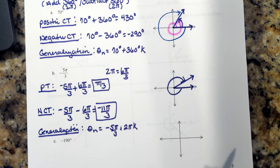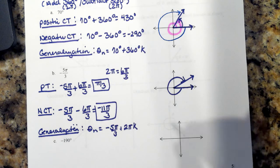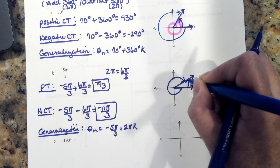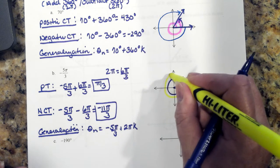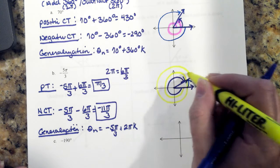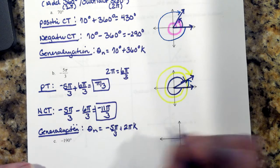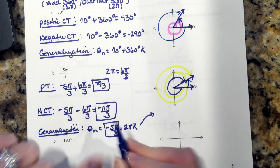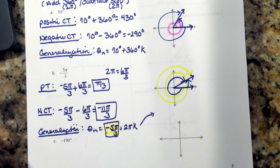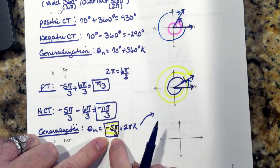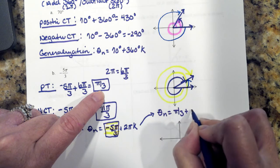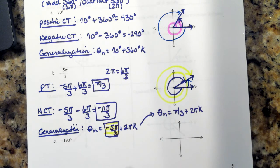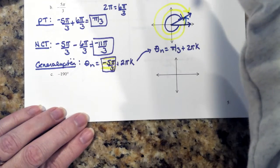That's the formula to calculate all coterminal angles. When looking at the generalization, pi over 3 is this angle right here. We want the angle in the generalization to be positive and between 0 and 2 pi. So a better way to express this generalization is to use the positive coterminal angle pi over 3: pi over 3 plus 2 pi k.